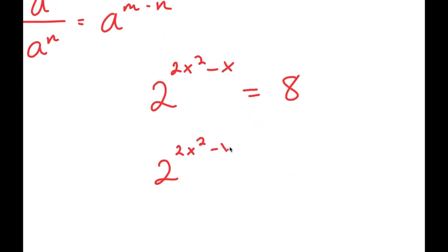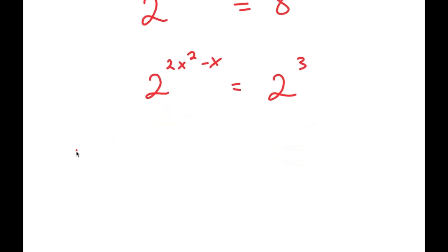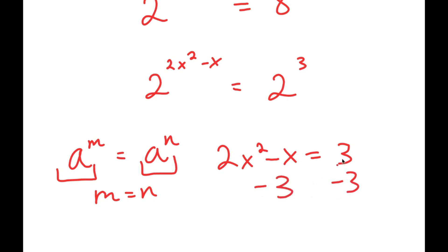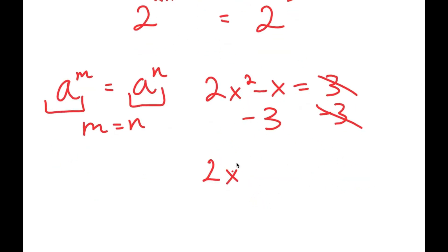Now I'm going to rewrite 8 as 2 to the power of 3. Another property of exponents is that if a to the power of m equals a to the power of n, then m equals n — if the bases are the same, the exponents are equal. So now I have 2x squared minus x equal to 3, and subtracting 3 from both sides I get 2x squared minus x minus 3 is equal to 0.